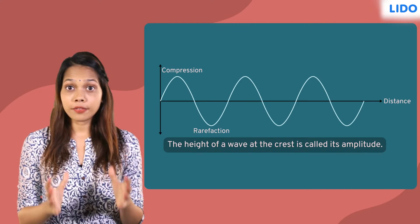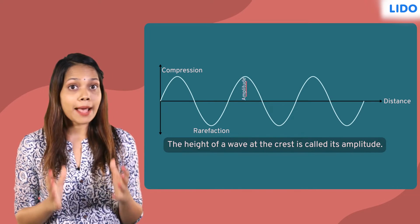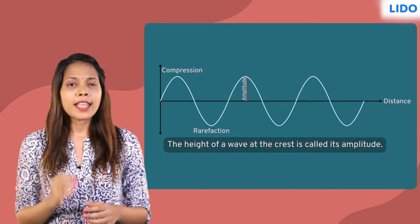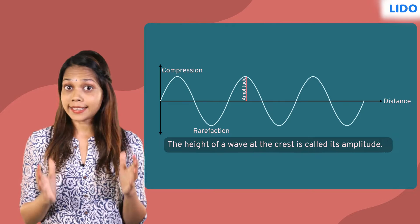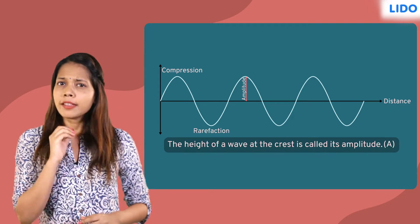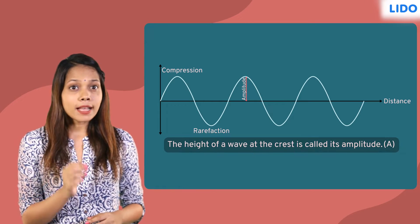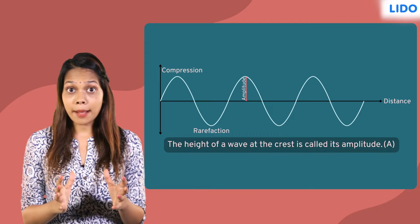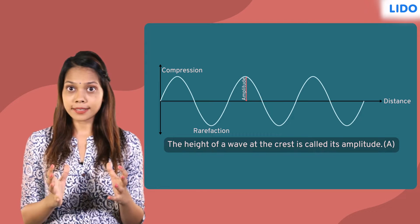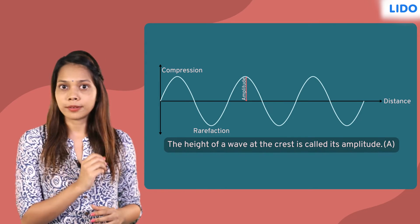The height of a wave at the crest is called its amplitude. Amplitude is represented as A. If amplitude is less, the sound is not loud. If the amplitude increases, the sound becomes louder.